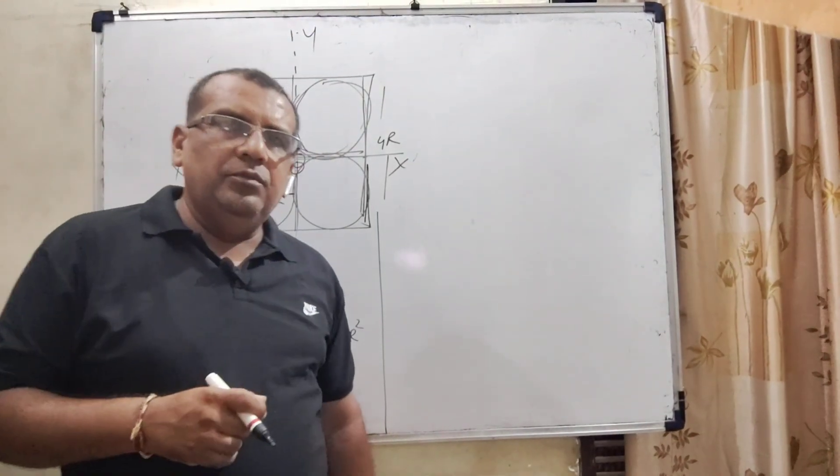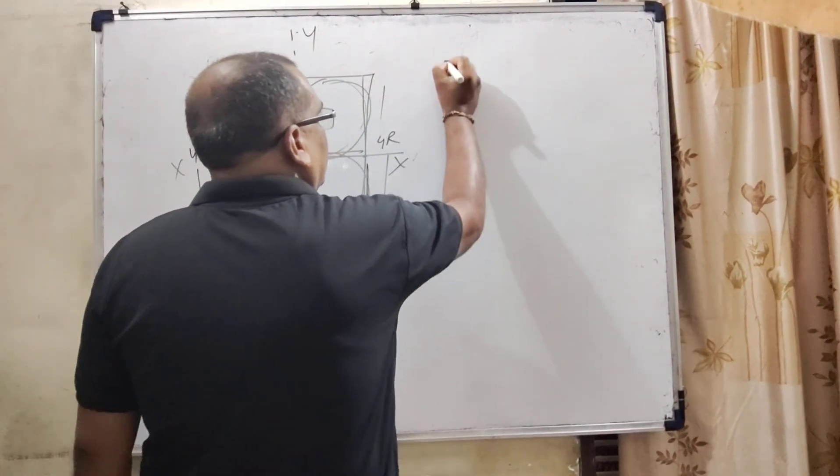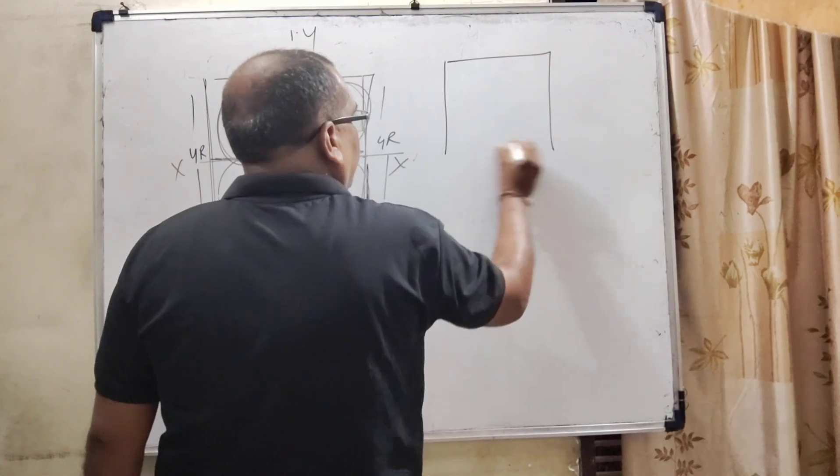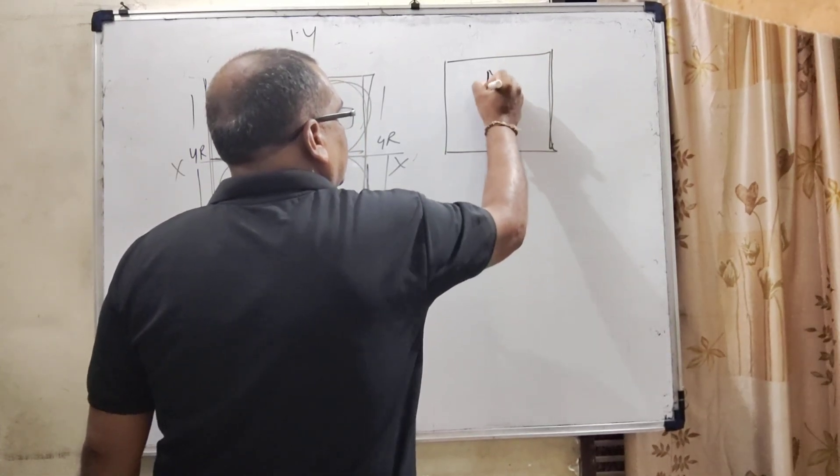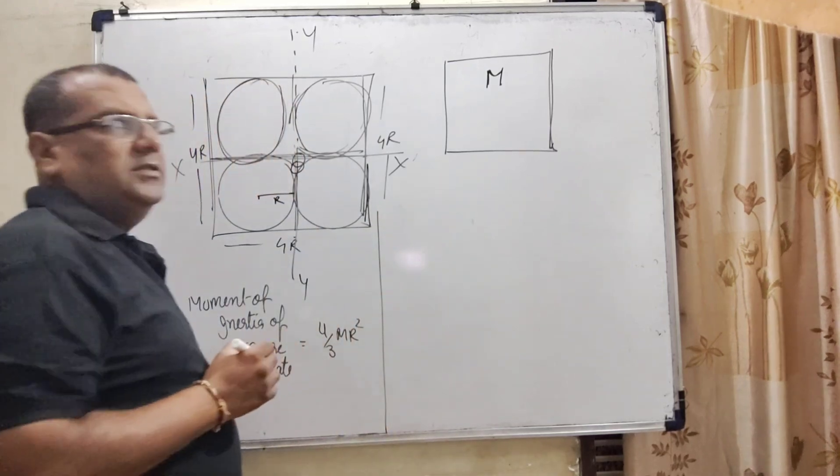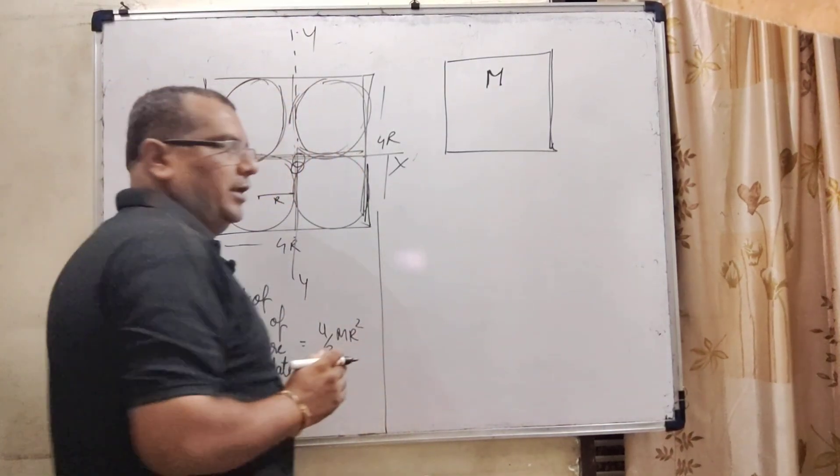Now, for moment of inertia of the disc we require the mass. How can we get the mass? First, we already know the mass of the square plate is capital M. So first we have to find out mass per unit area.